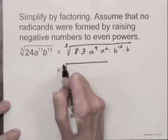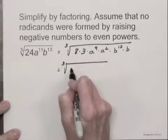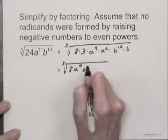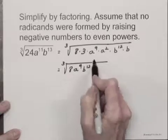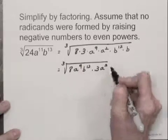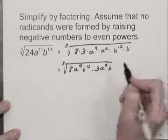And now let's group all the perfect cubes together. I have 8 times a to the 9th times b to the 12th, and they are multiplied times 3 times a squared times b.